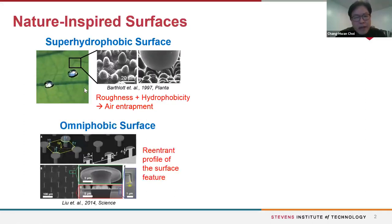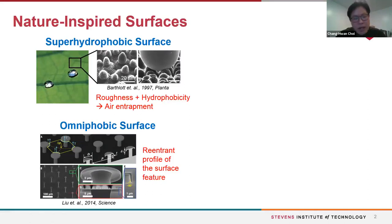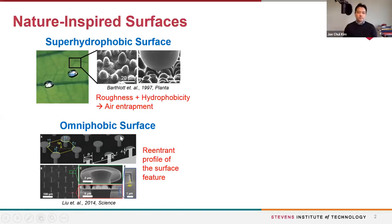However, that idea mainly works for aqueous liquid such as water. Recently, people found that if you tune the surface profile using re-entrant or mushroom-type structures, not only aqueous liquid but also organic solvents, alcohol, and so on — basically every liquid — can be repelled by the surface. This is called omni-phobic surfaces.